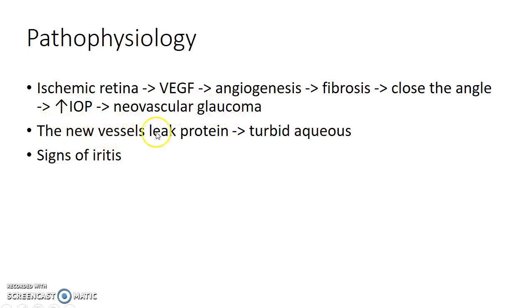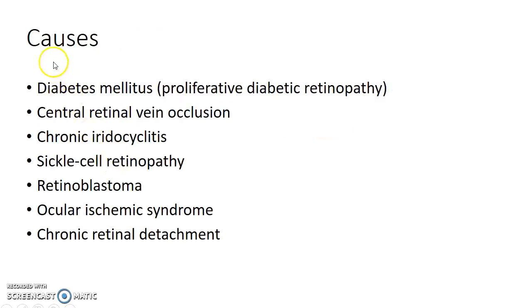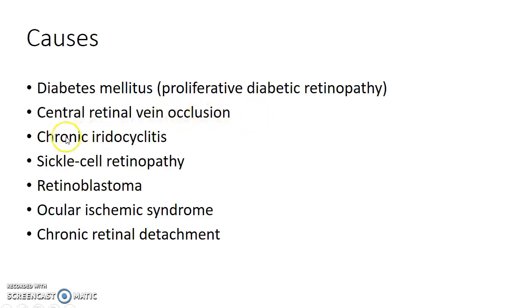The new abnormal blood vessels can also leak protein, leading to a turbid aqueous. There can also be signs of iritis in Rubiosis Iridis. The two main causes of Rubiosis Iridis are diabetes mellitus — specifically proliferative diabetic retinopathy — and central retinal vein occlusion.